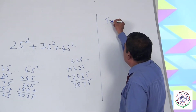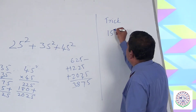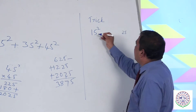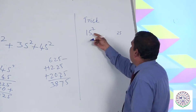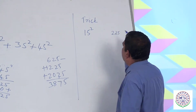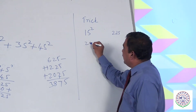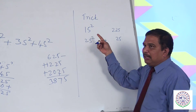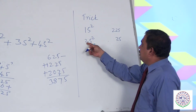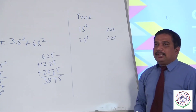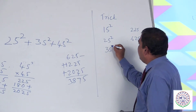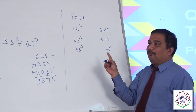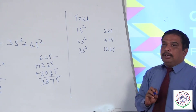The trick applies to numbers ending in 5. Take 25 squared: the last two digits are always 25. Take the leading digit 2, add 1 to get 3, multiply 3 into 2 to get 6, so 25 squared is 625. For 35 squared: keep 25, add 1 to the leading digit 3 to get 4, multiply 4 into 3 to get 12, so 35 squared is 1225.